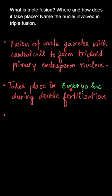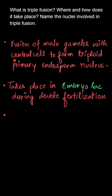It takes place in the embryo sac during double fertilization. The pollen grain induces the pollen tube, which releases two male gametes, also called sperm cells. Out of these two, one will fertilize the central cell and the other will fertilize the egg cell — this is called double fertilization.